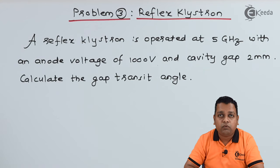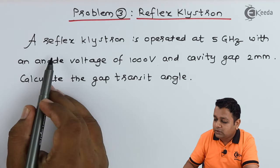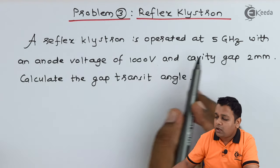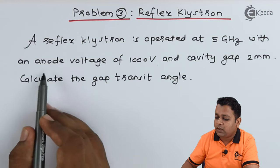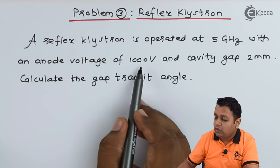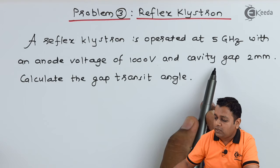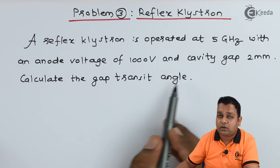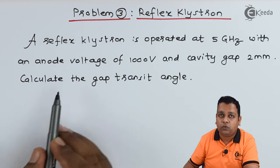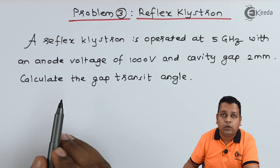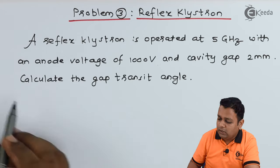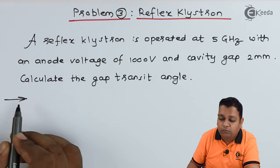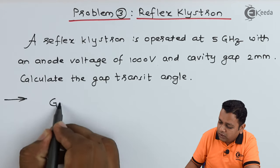The problem statement for the reflex klystron is provided to us. A reflex klystron is operated at 5 GHz with an anode voltage of 1000 volts and cavity gap 2 mm. Calculate the gap transit angle. To read the problem statement, first of all we note down the given details. Here we have the given data.